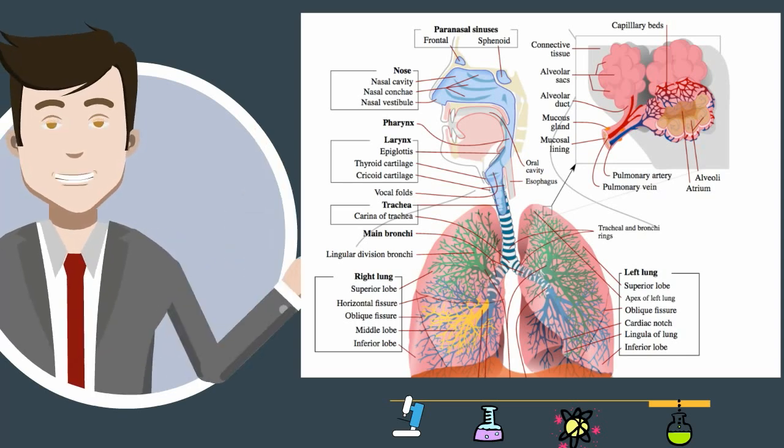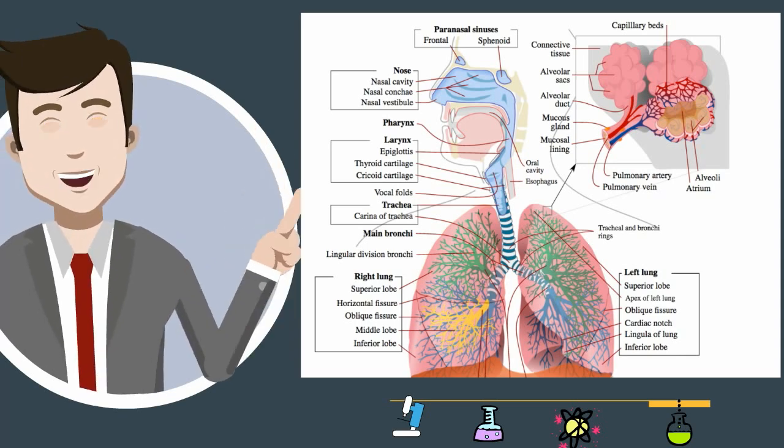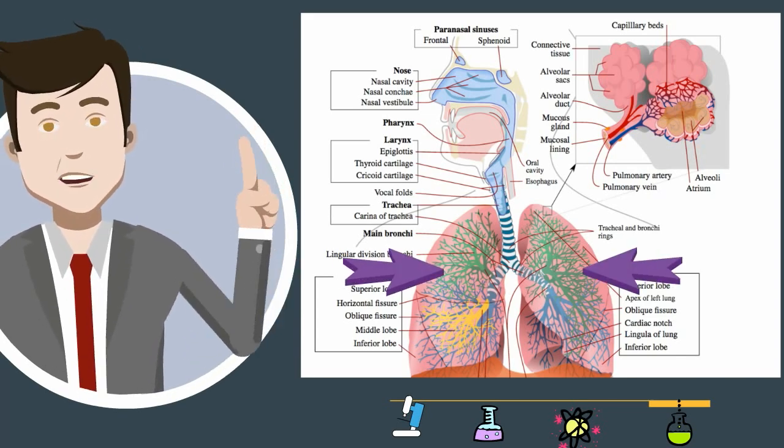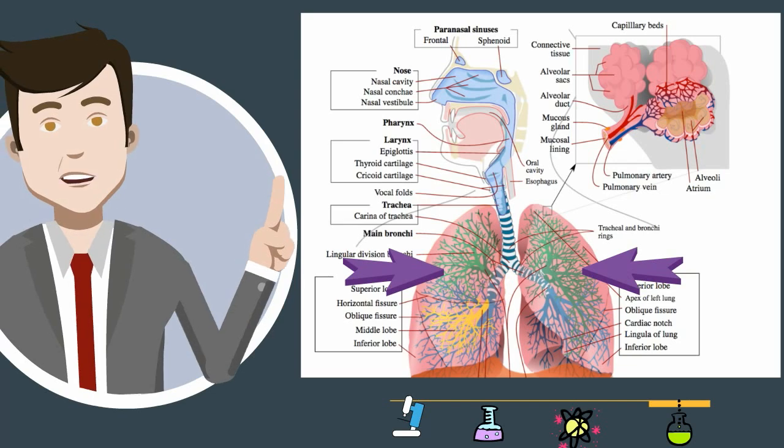The trachea is the main passageway into the lungs. It is made up of cartilage that divides into a right and left bronchus. The right main bronchus is shorter and wider than the left bronchus.